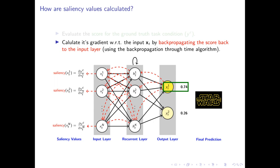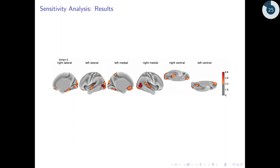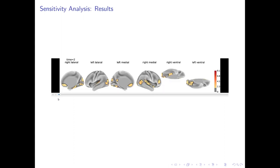Next, these saliency values can be visualized on the brain surface as well. Here we show the most salient regions at each time point while the participant watches the movie Star Wars.